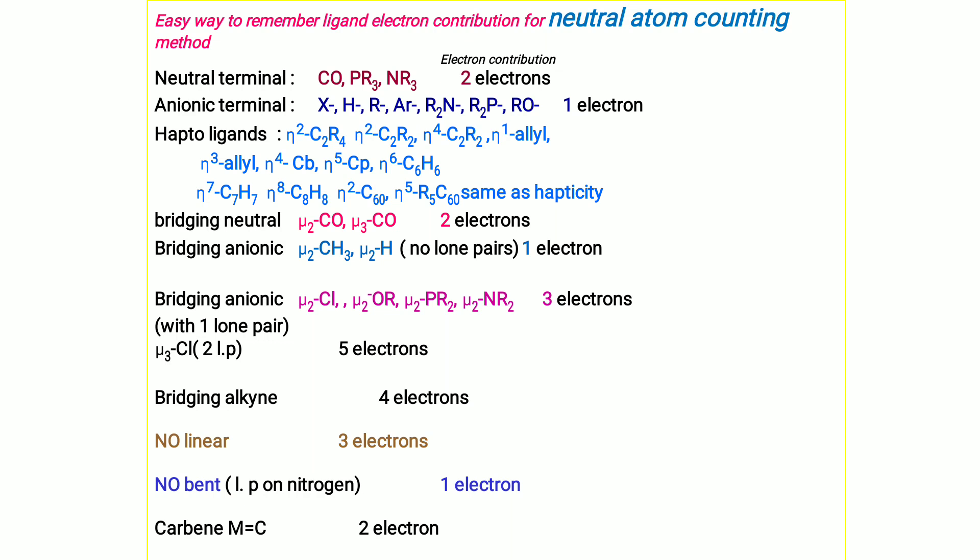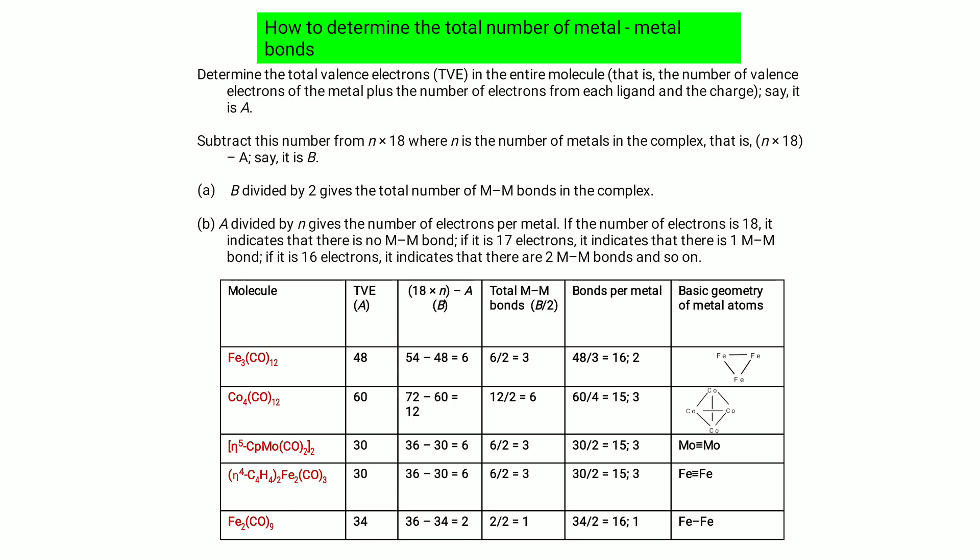To determine the total number of metal-metal bonds: first calculate total valence electrons in the entire molecule (metal d electrons + ligand electrons + charge) — call this A. Then subtract A from (n × 18) where n is the number of metals — call this B. Then B ÷ 2 gives the total number of metal-metal bonds. Also, A ÷ n gives electrons per metal: 18 means no metal-metal bond, 17 means one bond, 16 means two bonds, and so on.